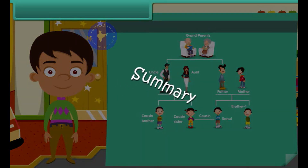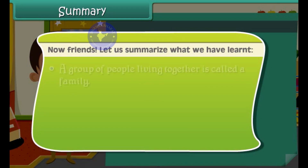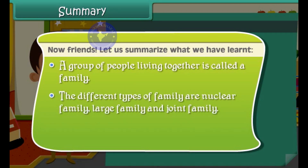Summary. Now friends, let us summarize what we have learned. A group of people living together is called a family. The different types of family are nuclear family, large family, and joint family.